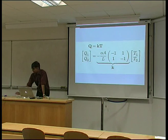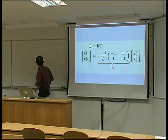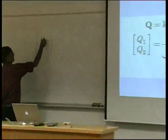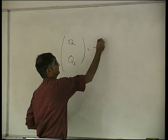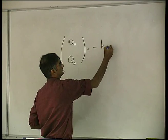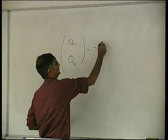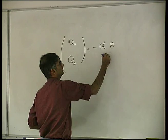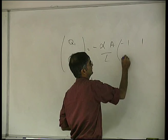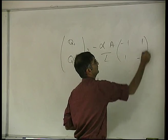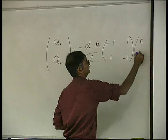Just to remind you, we have this equation. So, we have q1, q2, equals minus k, minus alpha, a, upon l, and then minus 1, 1, minus 1, and t1, t2.